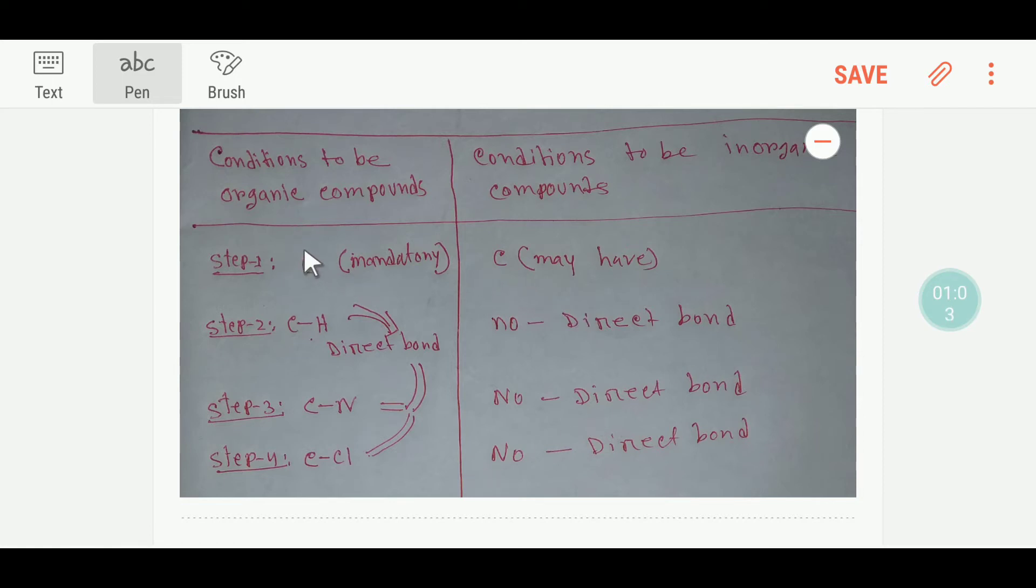In every organic compound, carbon is mandatory, but in case of inorganic compounds, carbon is not mandatory. In organic compounds, carbon-hydrogen, carbon-nitrogen, or carbon-chlorine direct bonds may be present.